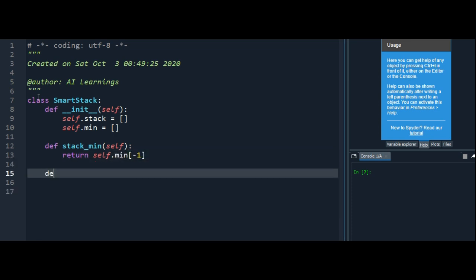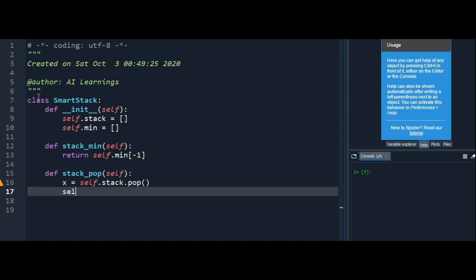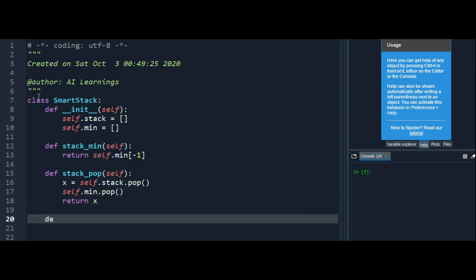Then I'll define a stack_pop method which will return the last element in the main stack. As you can see, x equals self.stack.pop and then we'll return this x. So x is nothing but the last element in the main stack.